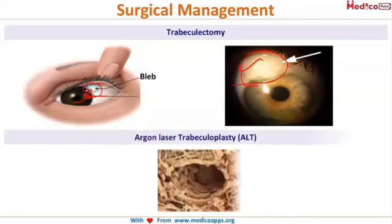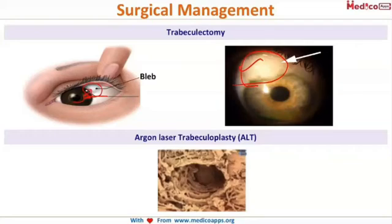Another procedure is argon laser trabeculoplasty. Here you expose the trabecular meshwork to the argon laser, which results in contraction of the meshwork — that is, constriction. Hence the openings will widen up. Once the meshwork contracts, the holes in it widen up and this increases the outflow. That covers the management of open angle glaucoma with surgeries: trabeculectomy and argon laser trabeculoplasty.